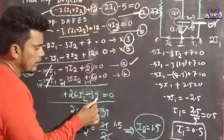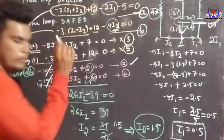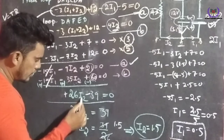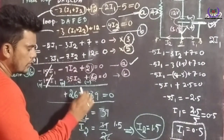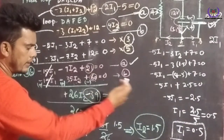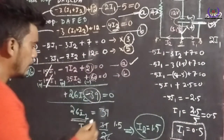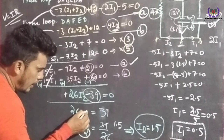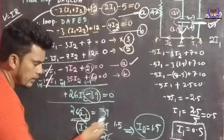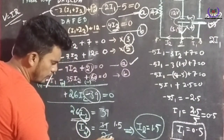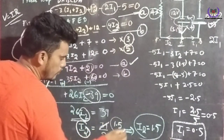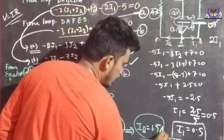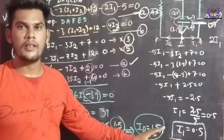From 26I2 = 39, bringing minus 39 to the other side gives plus 39. Dividing: I2 = 39 ÷ 26 = 1.5. So I2 equals 1.5 amperes.